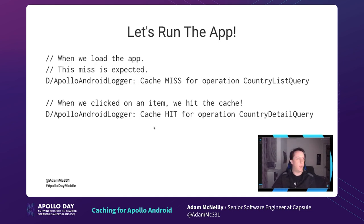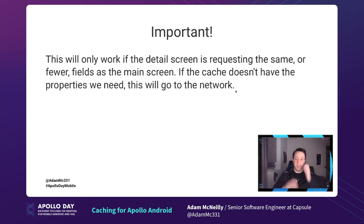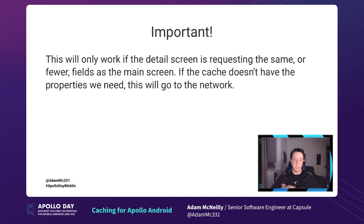Now when we run the app, loading the app gives a miss — expected, no country list in cache yet. But when I click on an item, I now see cache hit for operation country detail query. By leveraging the cache key resolver — telling it what key to store and how to look it up — I created an app that goes to the network only once when it loads the main country page, and when I click on each detail after that, it pulls from the cache. This only works if the detail page requests the same or fewer fields than the main screen.